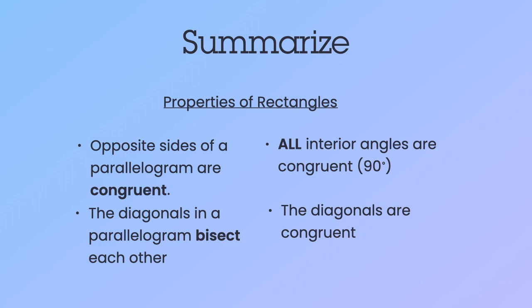So to summarize properties of a rectangle, we do have some parallelogram properties still: the fact that opposite sides are congruent, and the diagonals bisect each other. But then the new things on the right-hand side, all of the interior angles are congruent, they have 90 degrees, and the diagonals are congruent.